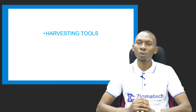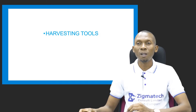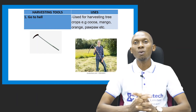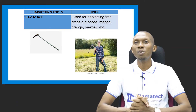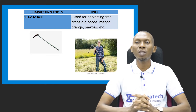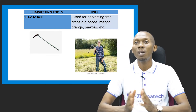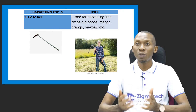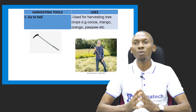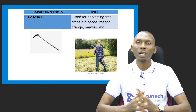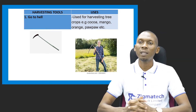Let's look at harvesting tools as another group of simple farm tools. Starting with the go-to-hell, which is a harvesting tool used for harvesting tree crops. Tree crops are usually tall — higher than the hands can reach — so you can make use of this simple farm tool to harvest tree crops like cocoa, mango, orange, and purple.